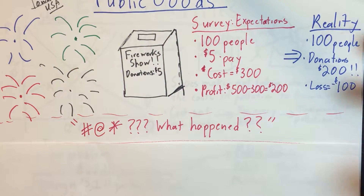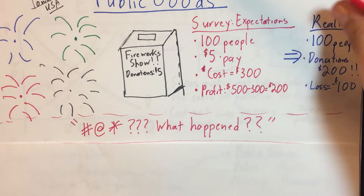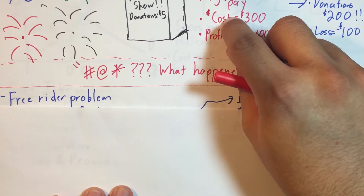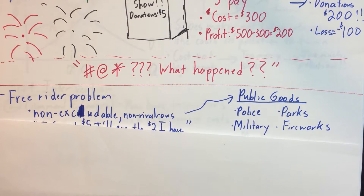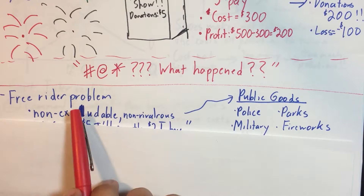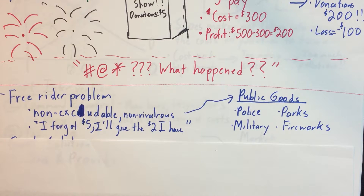So what happened? Why did people say they were willing to pay five dollars but you only got two hundred dollars in donations? You've run into the free rider problem. This has to do with non-excludability and non-rivalrousness of goods. Things like police, military, parks, and fireworks are non-excludable — fireworks are too high in the sky to prevent you from seeing them — and non-rivalrous, meaning my watching the fireworks doesn't take away from your watching them. When a good has both qualities, it's a public good and we get the free rider problem.